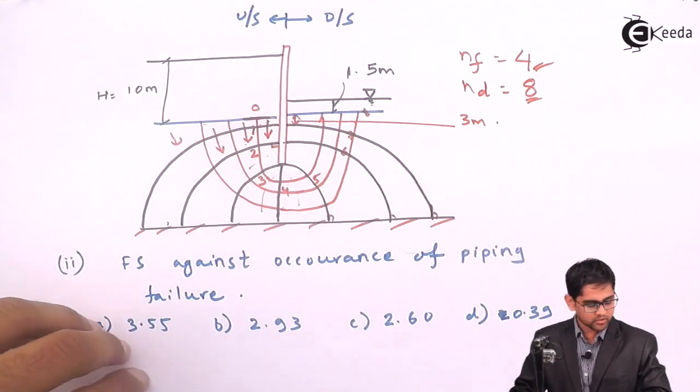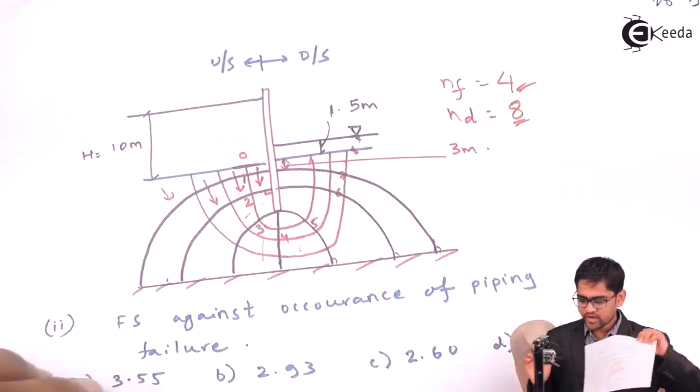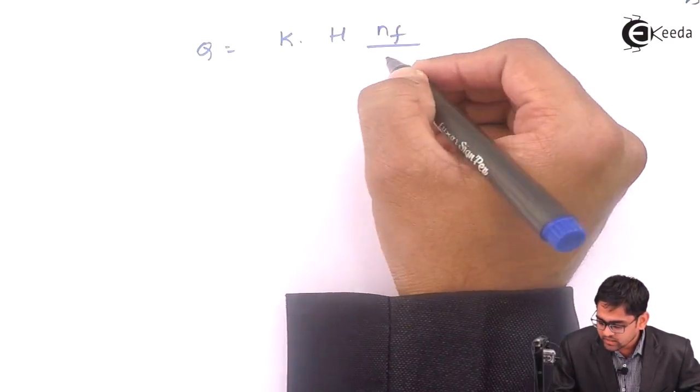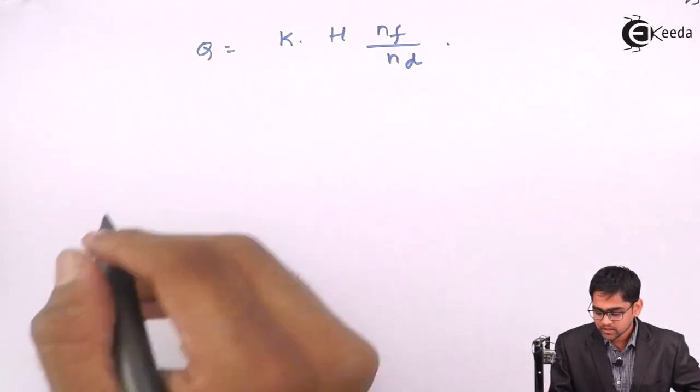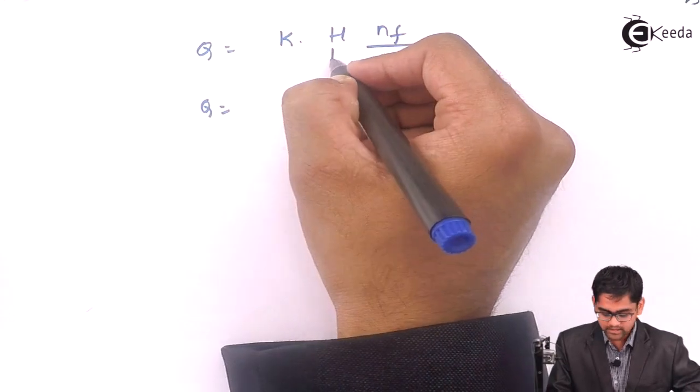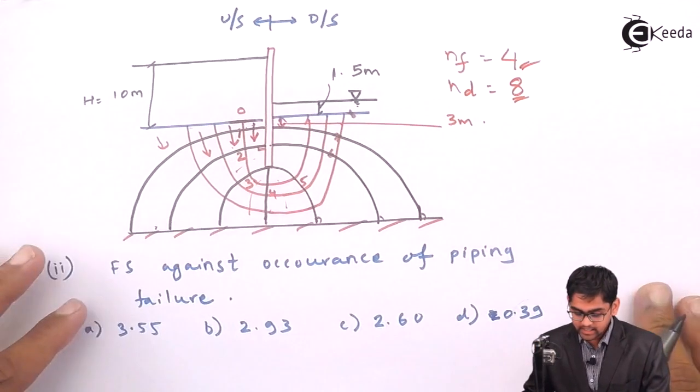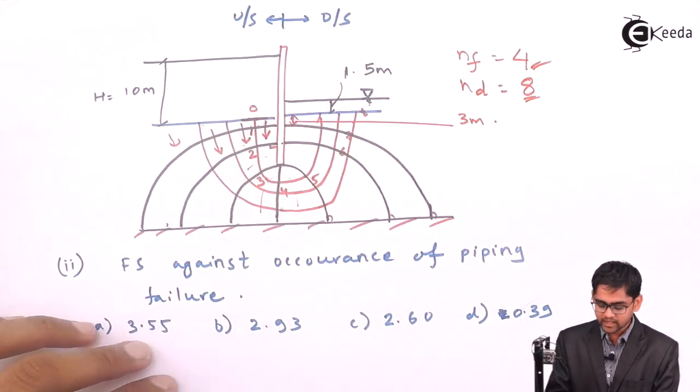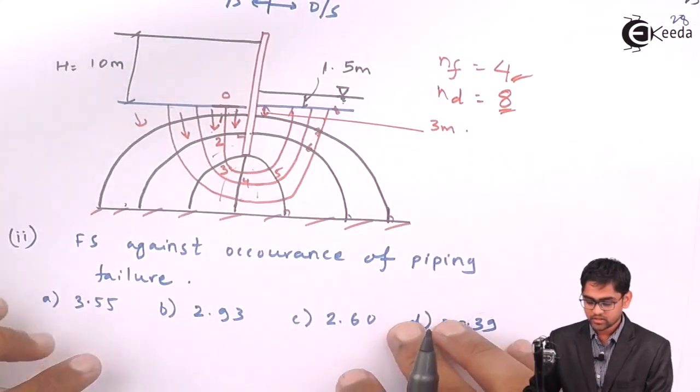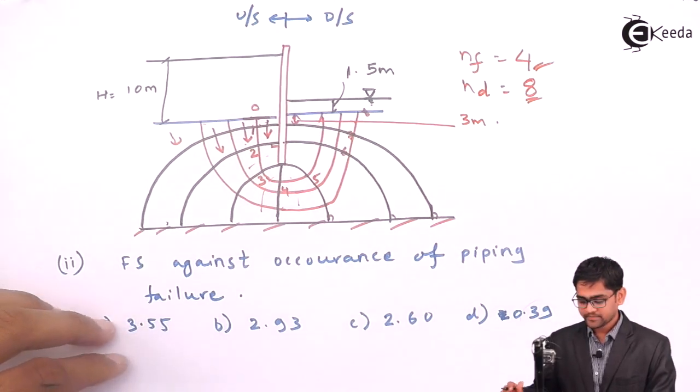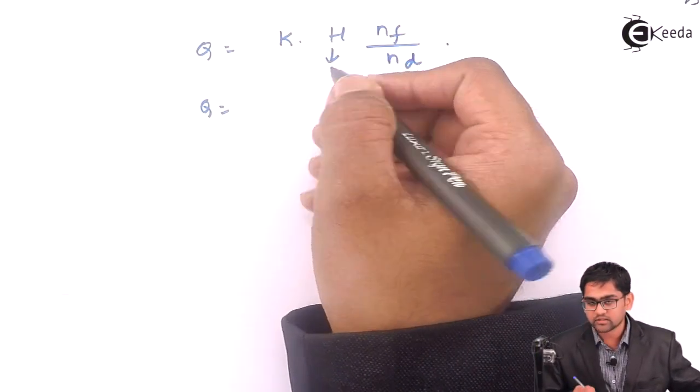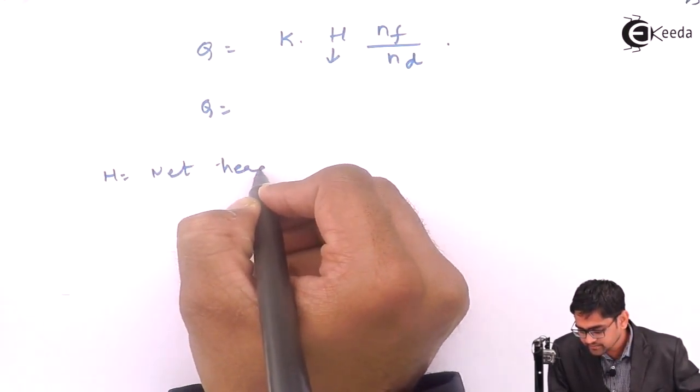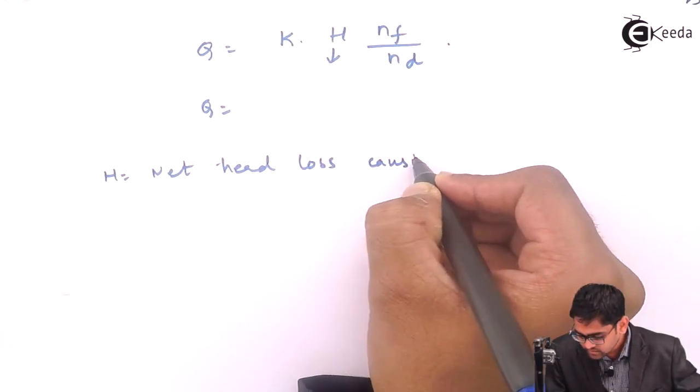The formula is simple to calculate the seepage loss. We have seen the formula q equals to k into h, NF number of flow channels into ND number of potential drops. Very important: h in the formula is nothing but the net head loss causing the flow to occur. Even though in the problem it is given h is 10 meter, you are not taking h equal to 10 meter.